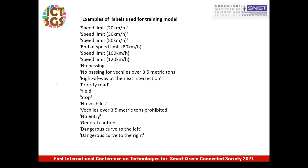These are some examples of the labels used in the training dataset, which consist of speed limits, yield and stop signs, no vehicles label, and vehicles over 3.5 metric tons prohibited, among others.